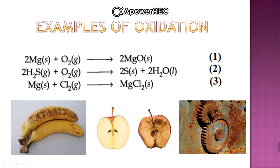In the second reaction, oxidation is happening — sulphur oxidation is happening as removal of an electropositive element is occurring. And similarly in the third example, magnesium and chlorine: in the reaction between these two, chlorine is getting added to magnesium. It means an electronegative element is getting added. So magnesium is undergoing oxidation.